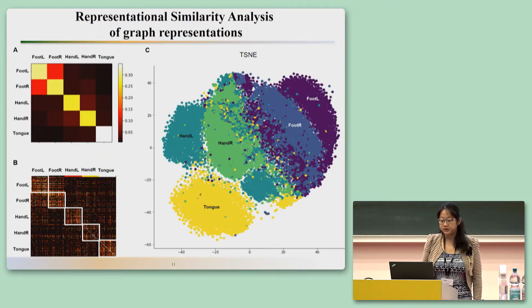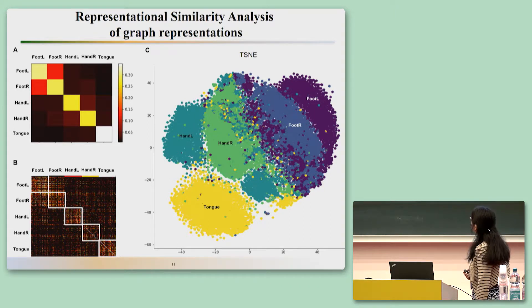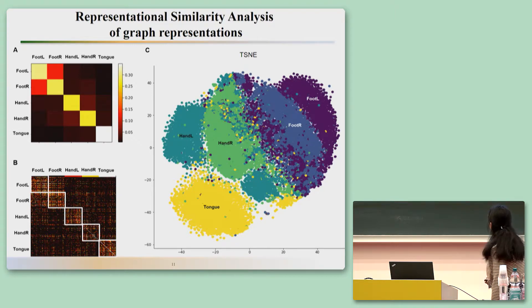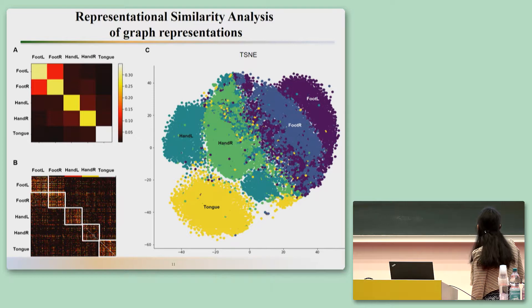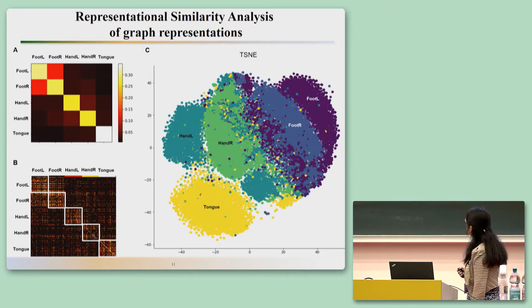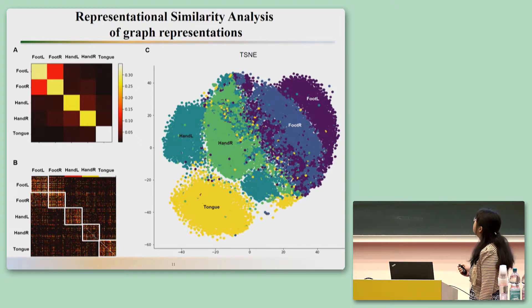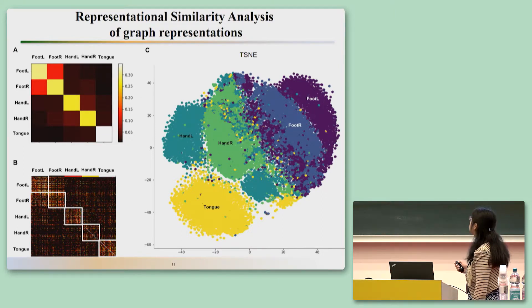As a second validation method, we used representational similarity analysis, which extracts the similarity between features generated by the network — called high-level graph representations. Mapping these high-dimensional representations to 2D, five different classes are clearly distinguished. Comparing pairwise correlations between graph features reveals a nice block-wise structure. After averaging within each class, the structure is even clearer, showing high similarity within conditions and moderate correlations between left and right movements, but very low correlations across different movements.